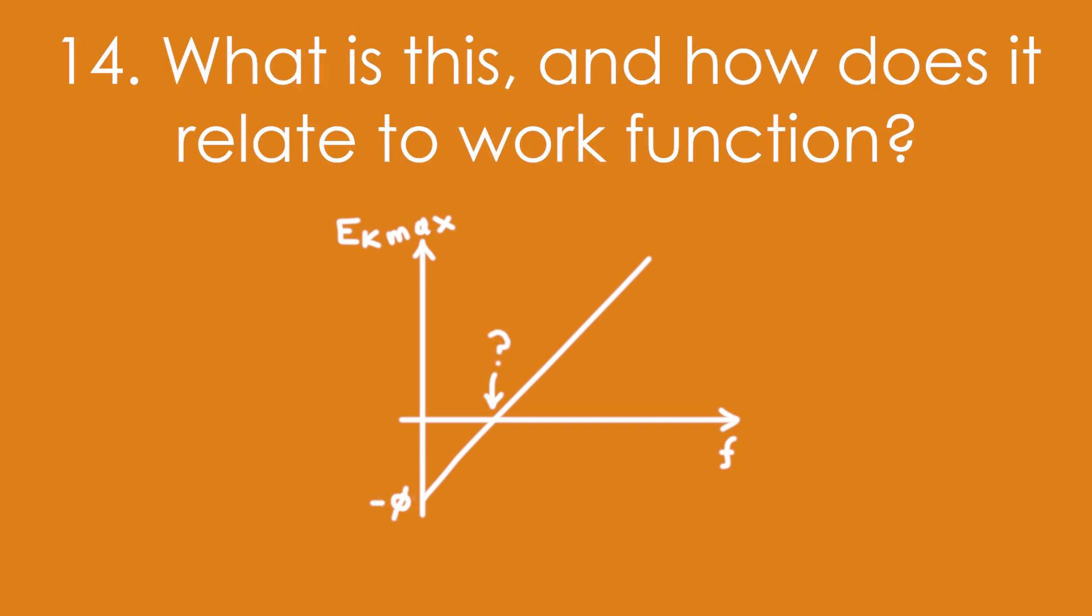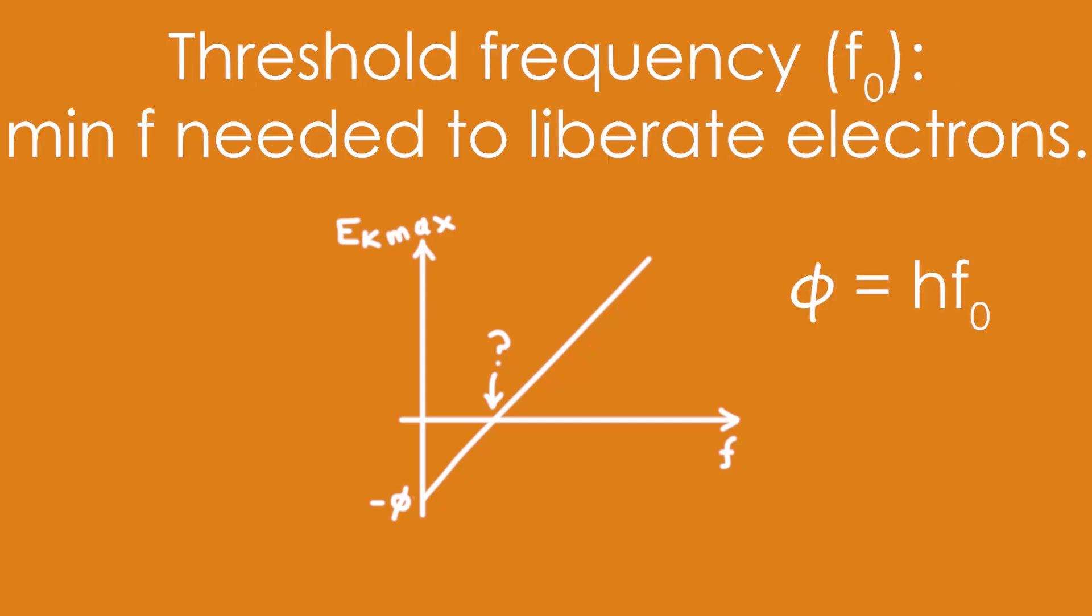Fourteen, what is this, the x-intercept, and how does it relate to the work function? It's the threshold frequency, f0. It's the minimum frequency needed to liberate electrons.